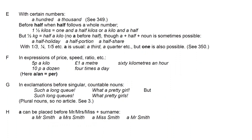A or AN must be used with certain numbers: a hundred, a thousand. It is also used before 'half' and when 'half' follows a number — for example, one and a half kilos. But if you are just saying 'half a kilo', there is no A before the half.